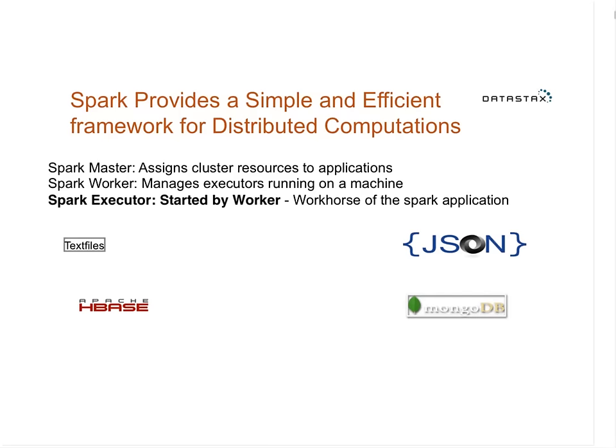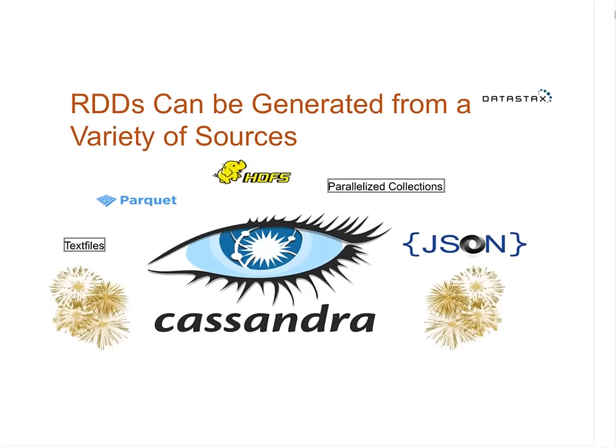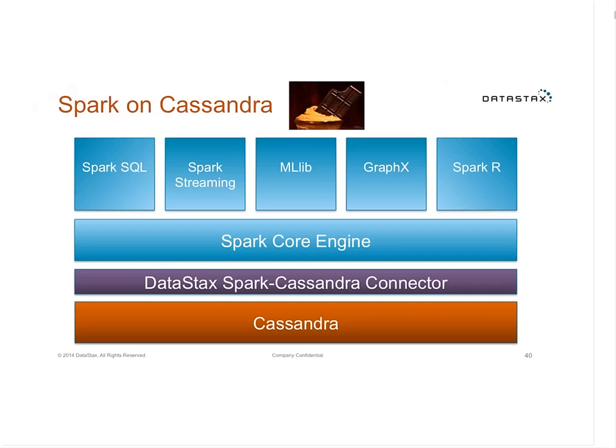RDDs and data frames can be generated from a whole host of sources: HDFS, text files, databases, and — ta-da — Apache Cassandra. The way Cassandra fits in with Spark is at the bottom of the stack. We can put a Cassandra database underneath the Spark core engine using the DataStax Spark Cassandra Connector, which is the open source interface code between Cassandra and the Spark engine. DataStax is doing the lion's share of that work.